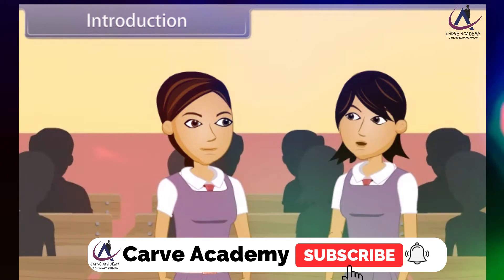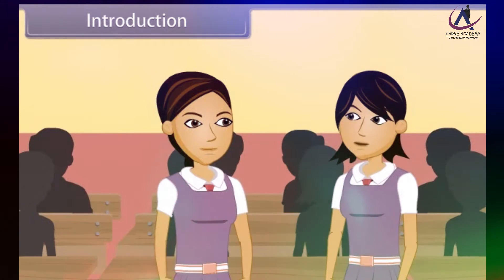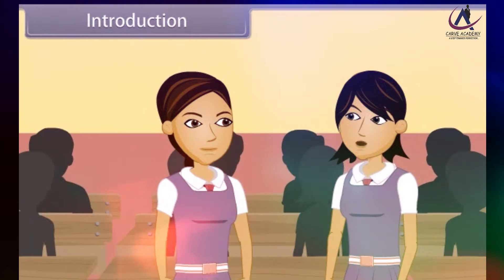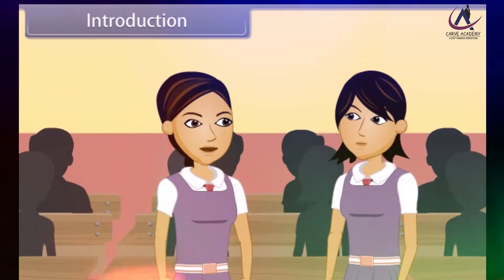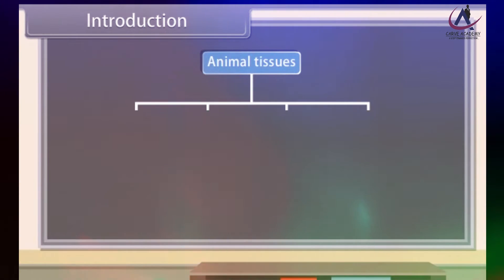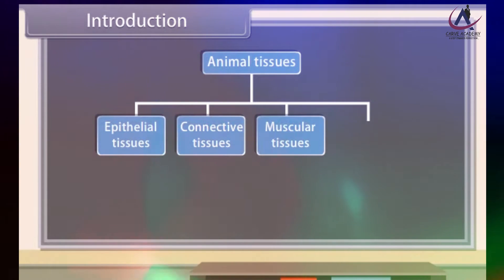Ankita, as we have already discussed earlier, animals are heterotrophic organisms. They cannot synthesize their own food, so they have to move in search of it. They also have to move in search of shelter and other vital activities of life. For the accurate performance of vital activities, there are various tissues for every activity. On the basis of their functions, animal tissues are of four types: epithelial, connective, muscular and nervous.